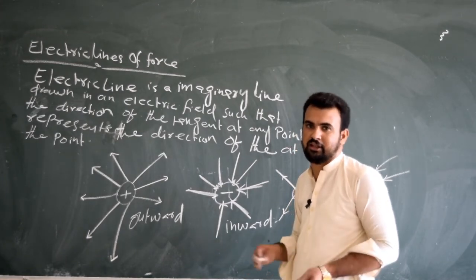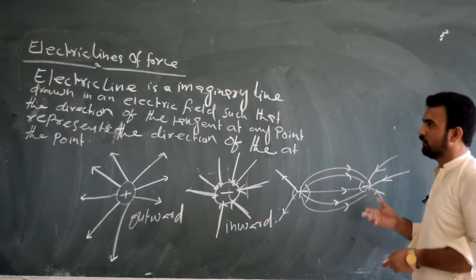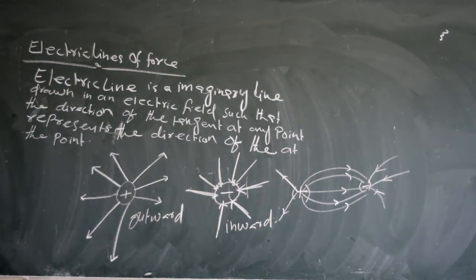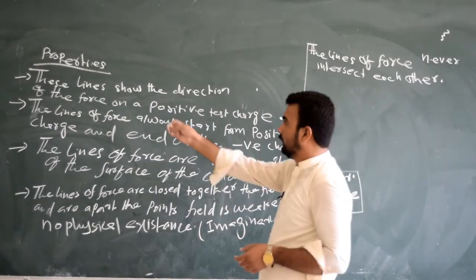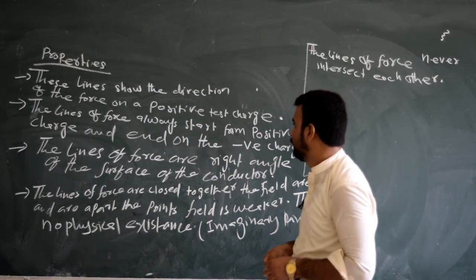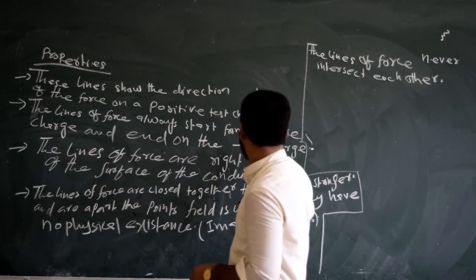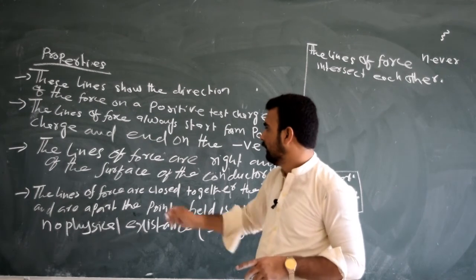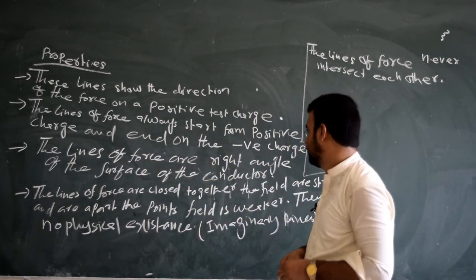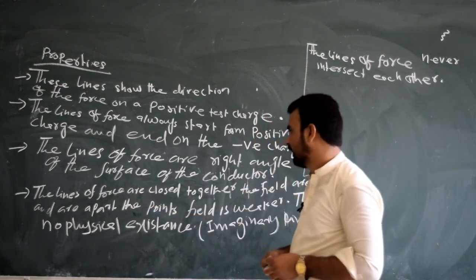These lines will not cross each other. Number one: these lines show the direction of the force on a positive charge. Number two: the lines of force always start from the positive charge and end on the negative charge. Number three: the lines of force are at right angles to the surface of the conductor. Number four: the lines of force are close to each other where the field is strongest.